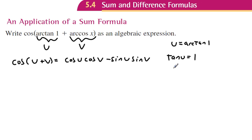Now we can create a right triangle and let this be u. The tangent of u is 1. Tangent is opposite over adjacent, so it has to be 1 over 1. So if we solve for the hypotenuse, it would be radical 2.